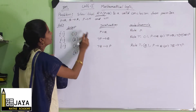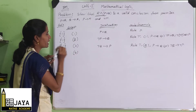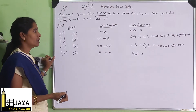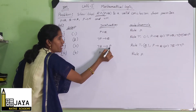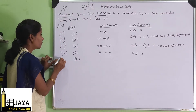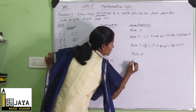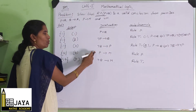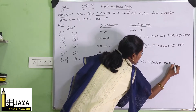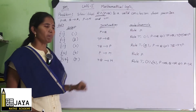In the fourth step, take the premise P implies M — rule P. Now there is another formula: P implies Q, Q implies R, so P implies R. In the fifth step, for steps 3 and 4, using rule T, we get negation Q implies M. The formula used is: P implies Q and Q implies R gives P implies R.